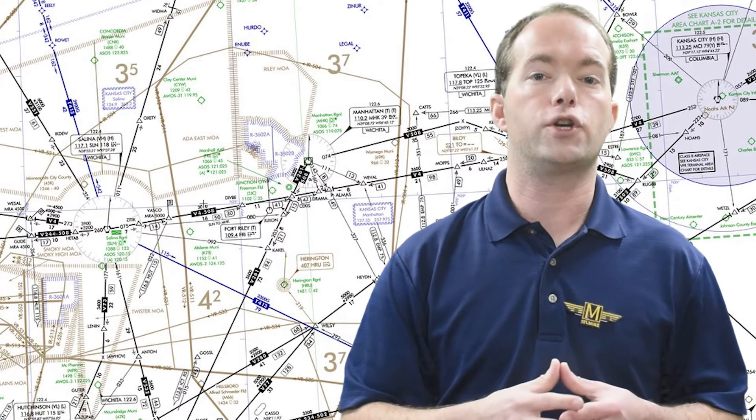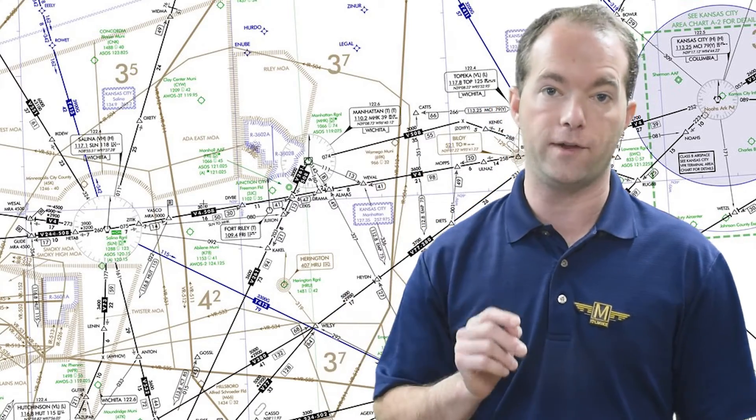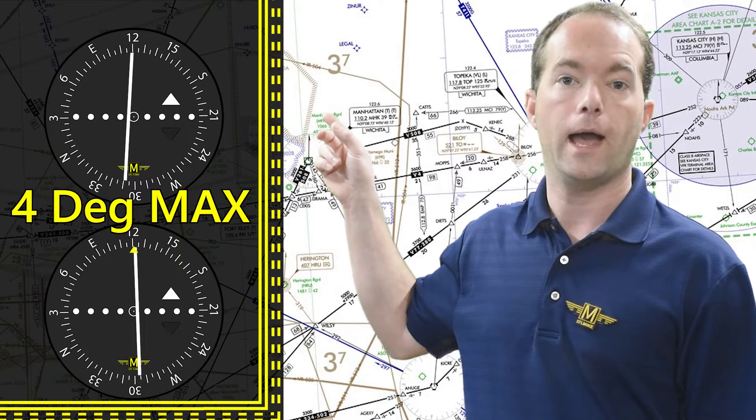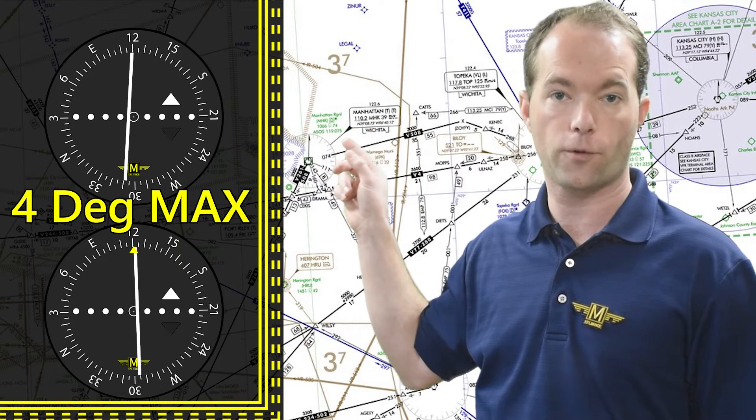The easiest way to do a check though is with a cross check. You can do that anywhere so long as you have two independent VOR setups, but they can share the same antenna. You dial in the same radial from the VOR and you're good to go as long as your two needles don't deviate more than four degrees between them.